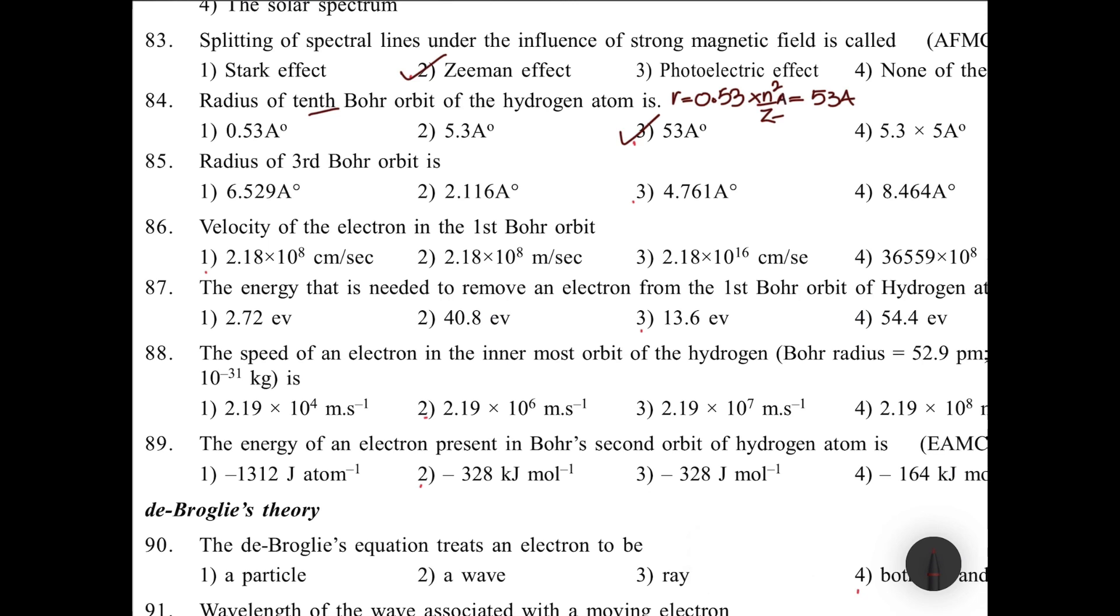Good job. Radius of third orbit: r = 0.53 × n². So 0.53 × 9 × 9 = 4.761 angstroms.